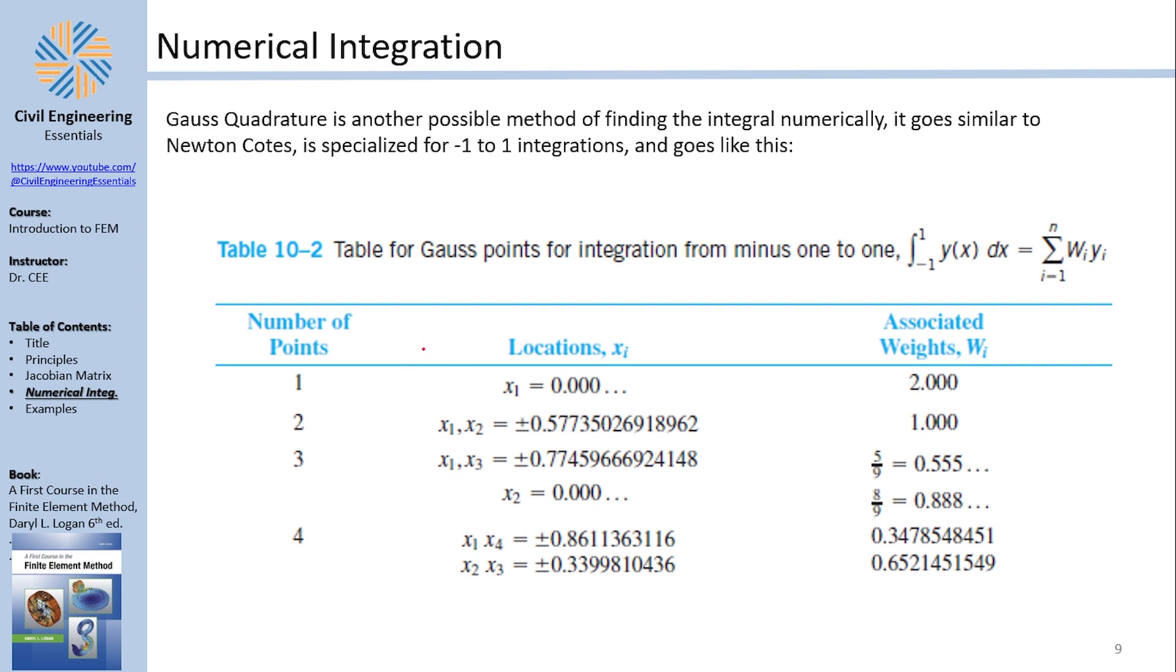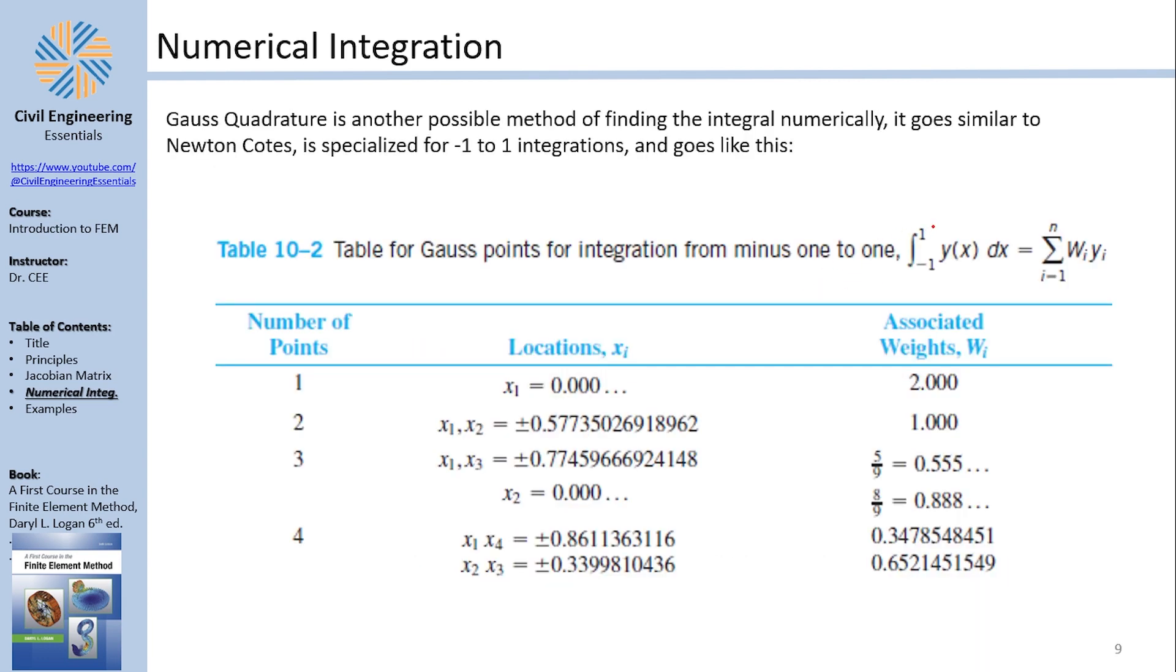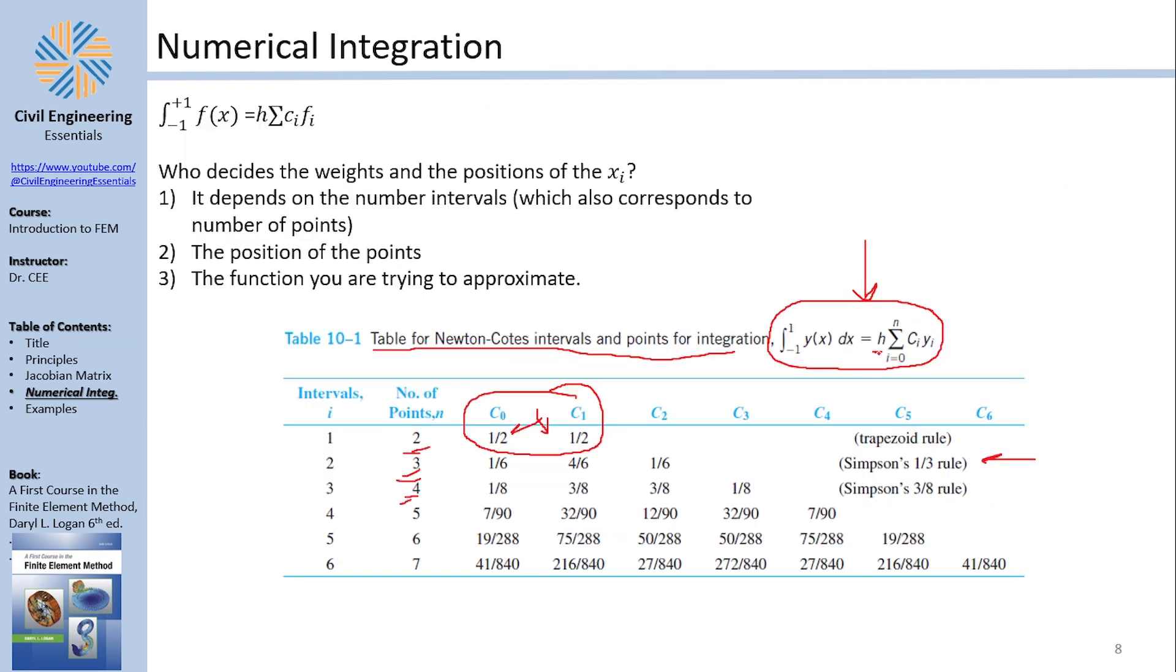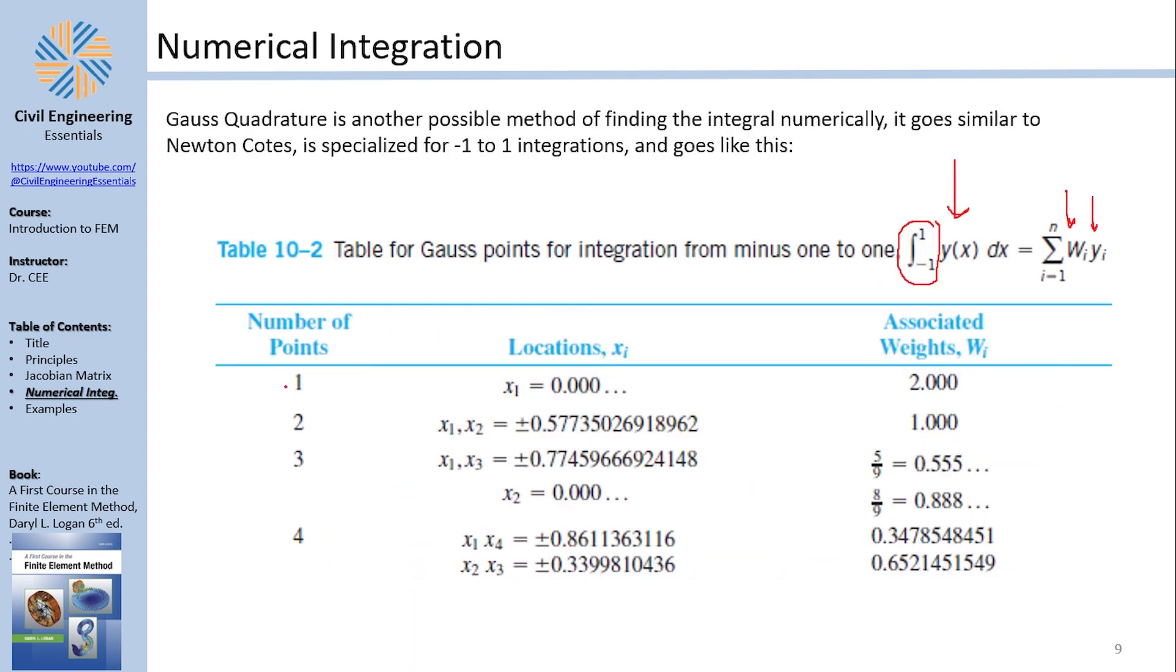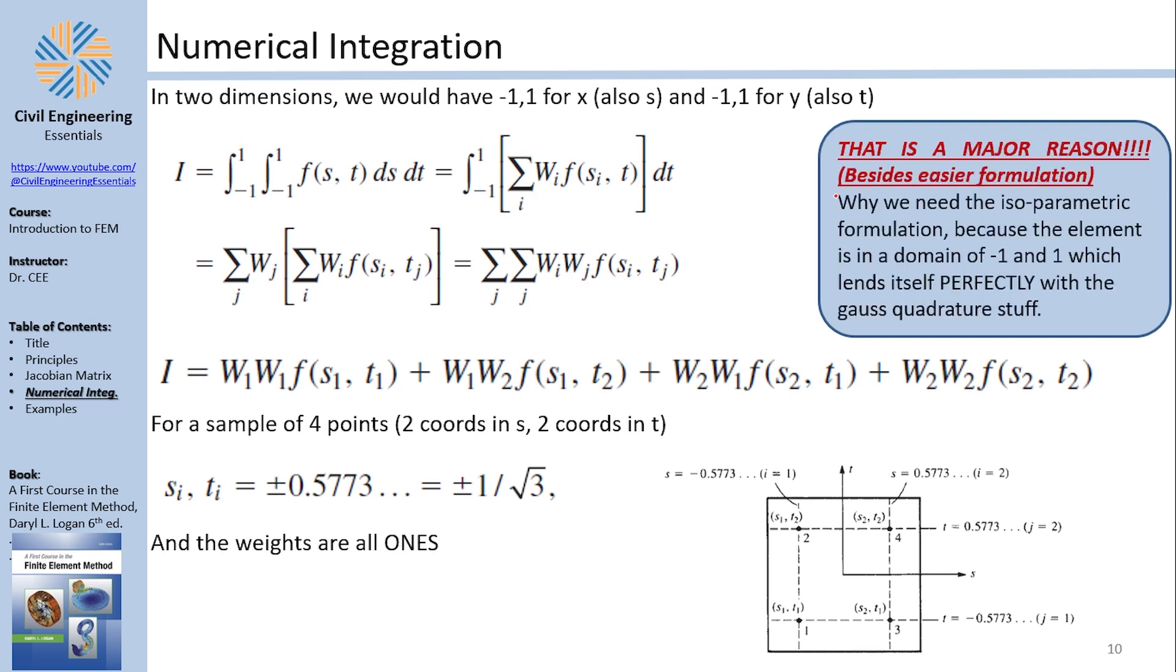Another way of finding the numerical integral here is to use the Gauss quadrature. The Gauss quadrature seems to be similar to the Newton-Cotes, it's just a more specialized version and it works perfectly from negative one to one. You see, it is one that is actually working very good for negative one to one integrations. It goes like this: the integration equals weight multiplied by function value. Gone is the h, it's just weight multiplied by function value. It gives you the x's and it gives you the weights. And notice Gauss quadrature is specialized for integrations from negative one to one. You know where you saw negative one to one? Well you saw negative one to one in the isoparametric formulation.